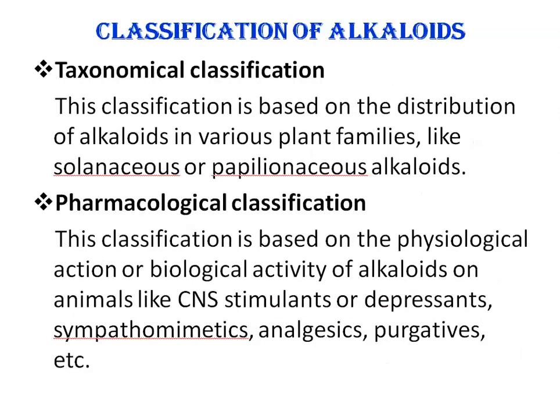Next is the classification of alkaloids. First is taxonomical classification, which is based on the distribution of alkaloids in various plant families — like solanaceous alkaloids present in family Solanaceae, or papilionaceous alkaloids present in family Papilionaceae. Sometimes they are grouped as per the name of the genus in which they occur. For example, ephedrine present in genus Ephedra, then cinchonine present in plant Cinchona, etc.